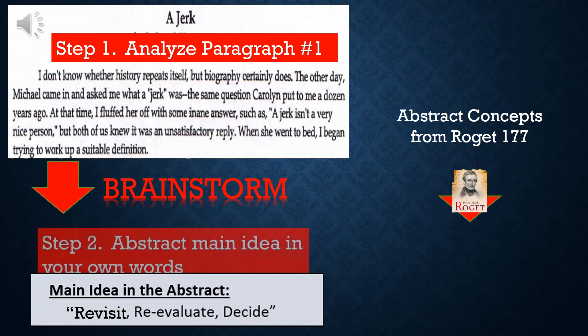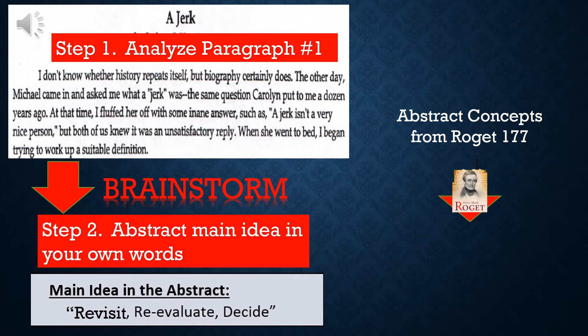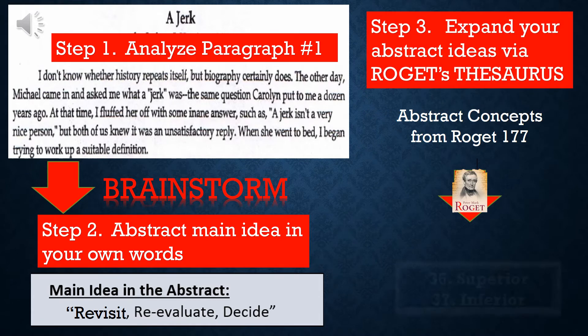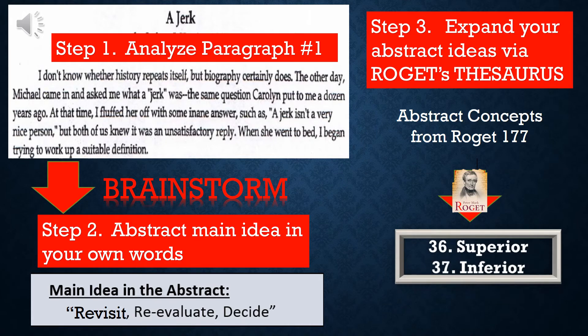In this sample, we're going to look at the first paragraph of the essay, The Jerk. We're going to try to abstract some main ideas, and then expand our own interpretations by looking at Roger's Thesaurus list of 177. In step one, analyze the paragraph — I came up with my own main ideas that this paragraph is about revisit, reevaluate, and decide. If you read the paragraph, those are the words that I thought most definitely describe what's going on in that paragraph.